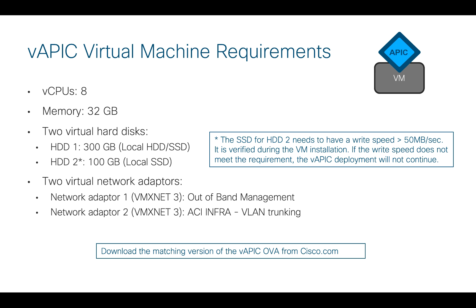That's going to work too, but this is outside of production, so please proceed with caution — that's only for lab. And then finally, each of the VAPICs will have two virtual network adapters, both VMXNet3. One of them will be connecting to the infra side of the house, and the other one will be used for out-of-band management purposes.